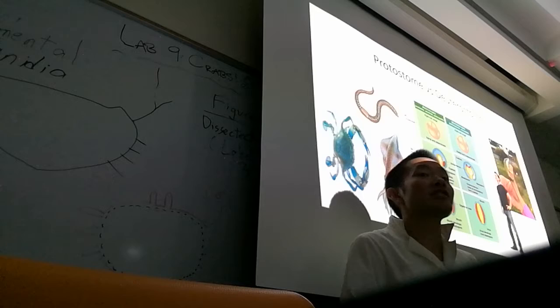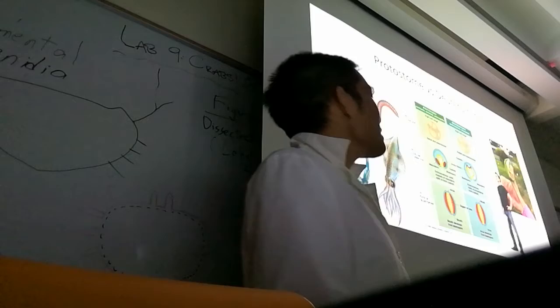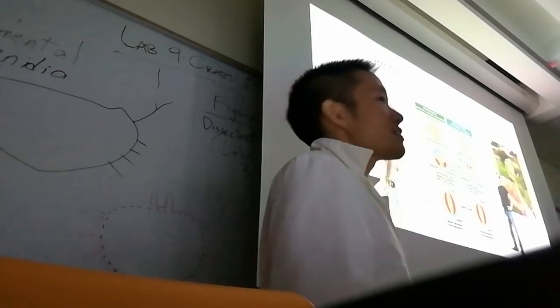form the anus first, and the mollusks, the arthropods, and the annelids are protostomes, so they form the mouth first. An easy way that you can remember the difference between protostomes and deuterostomes is that deuterostomes starts with 'deut' just like 'doot' or 'doo-doo', and deuterostomes form the anus first. That's the easy way you can remember that.